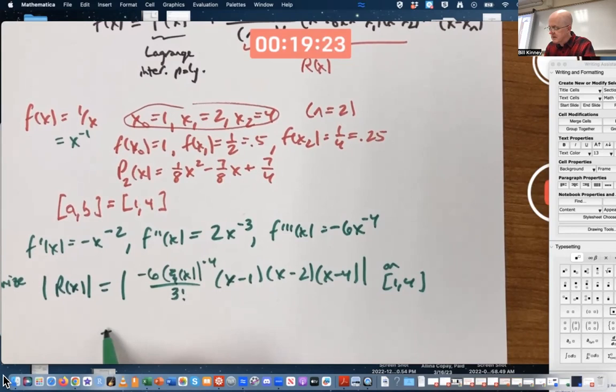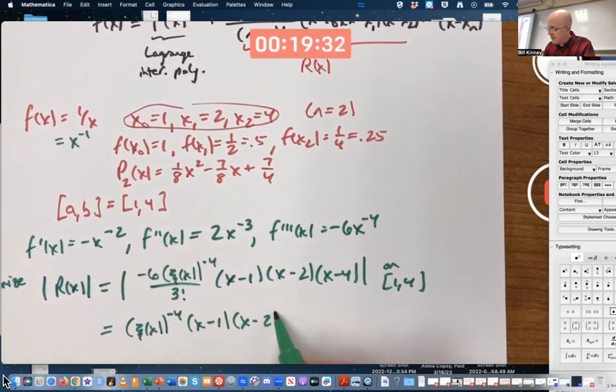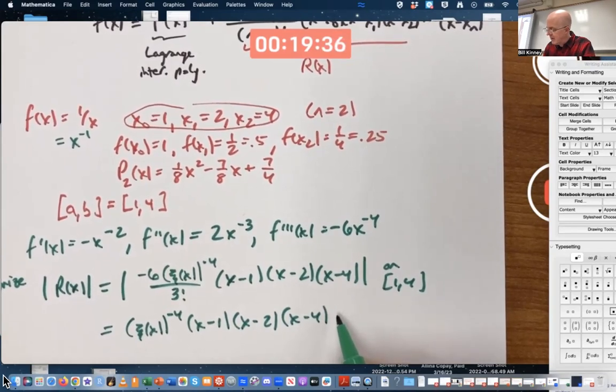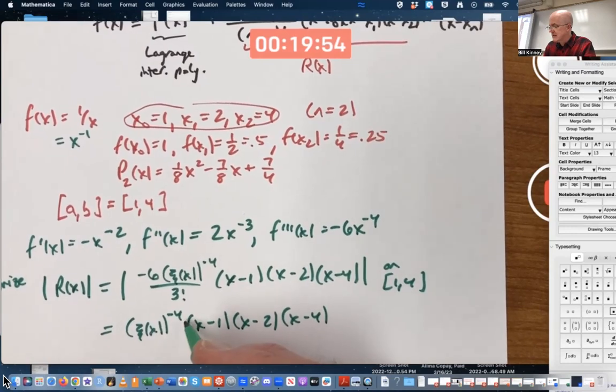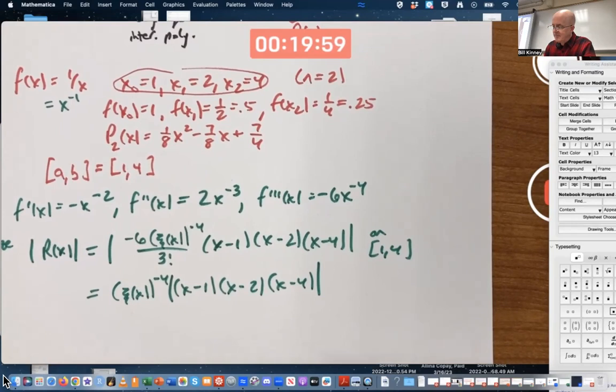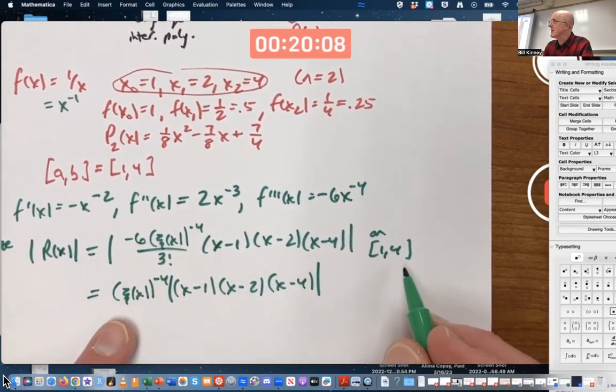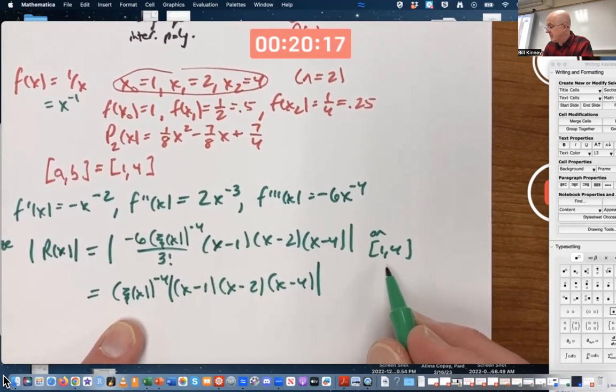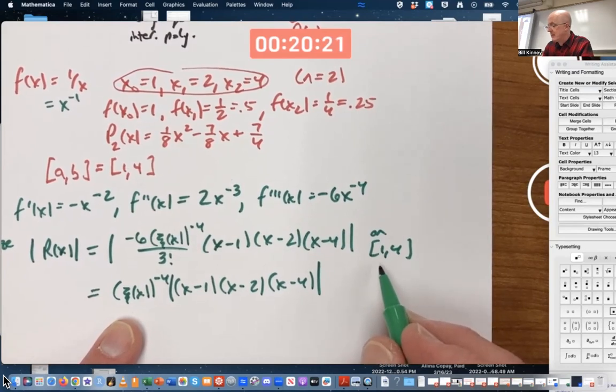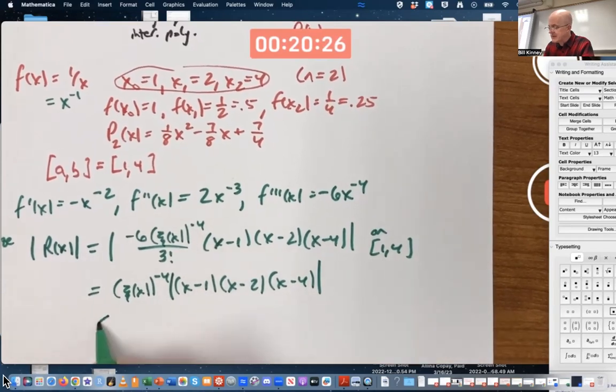3 factorial is 6, so the 6's cancel. The absolute value signs can be gotten rid of. Oh wait, actually no, they can't, because not everything's positive. x-2 and x-4 are not necessarily positive depending on what x is. In fact, x-4 would be negative. So I can keep the absolute value signs in there, but I certainly can say ξ(x) is positive, and so ξ(x)^(-4) would be positive. On this interval, where is that quantity maximized? Well, it's to the -4 power, so it's going to be maximized when ξ(x) is as small as possible. ξ(x) is going to be between 1 and 4, so this has to be less than or equal to 1^(-4).